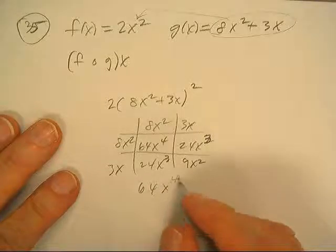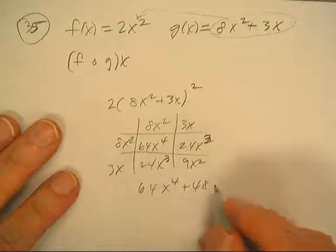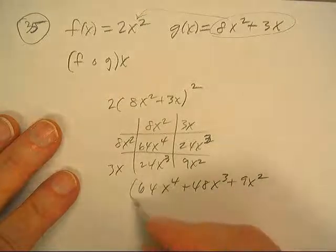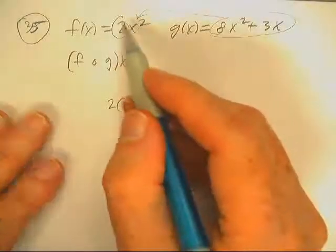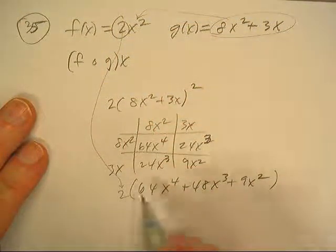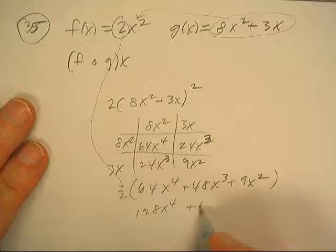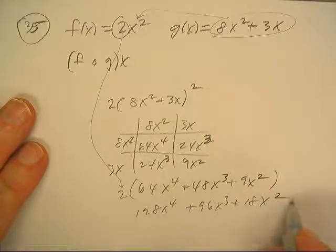64x to the 4th plus 48x to the 3rd plus 9x squared. And then we've got to multiply it by 2: 128x to the 4th, 96x cubed, and 18x squared.